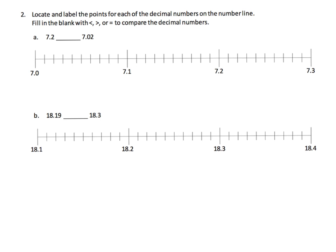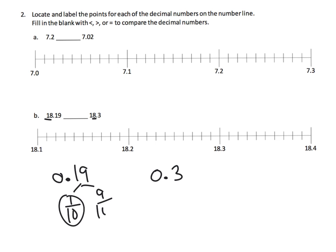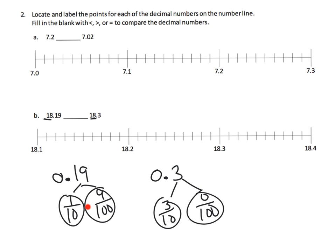Now we're being asked to use a number line to compare our decimals. We're going to do 18.19 versus 18.3. Since both numbers are 18-point-something, really all we need to look at is the decimal portion: 0.19 and 0.3. That's 1 tenth plus 9 hundredths versus just 3 tenths — exactly like the problem we just did. Let's show what that looks like on the number line.